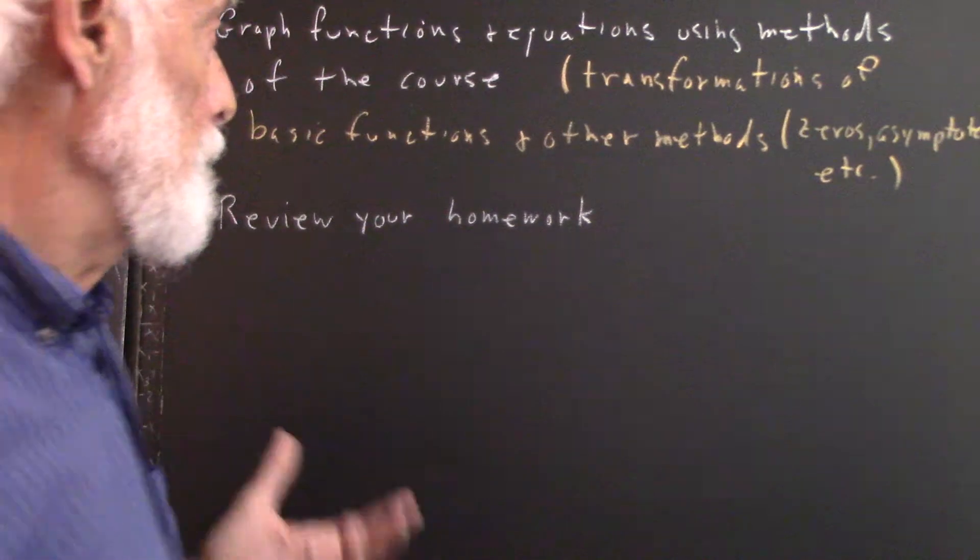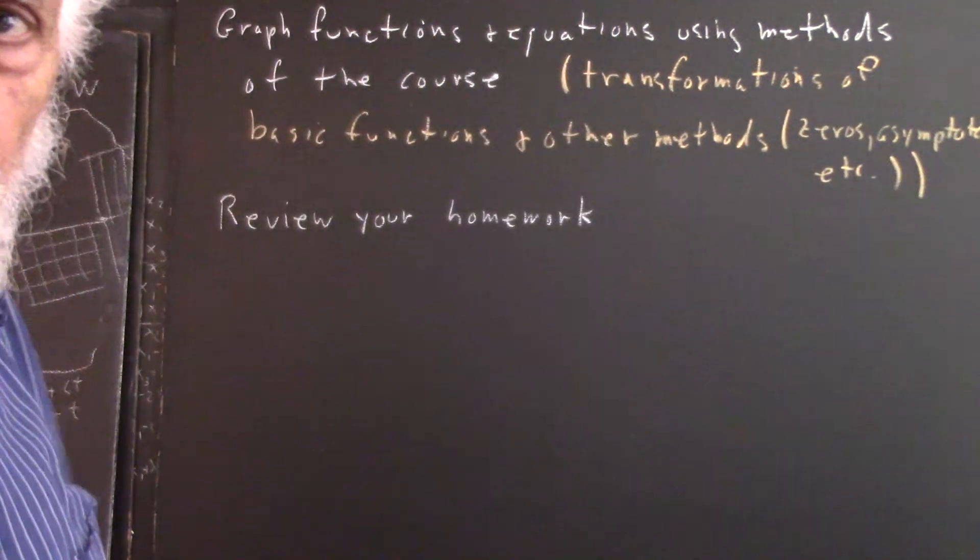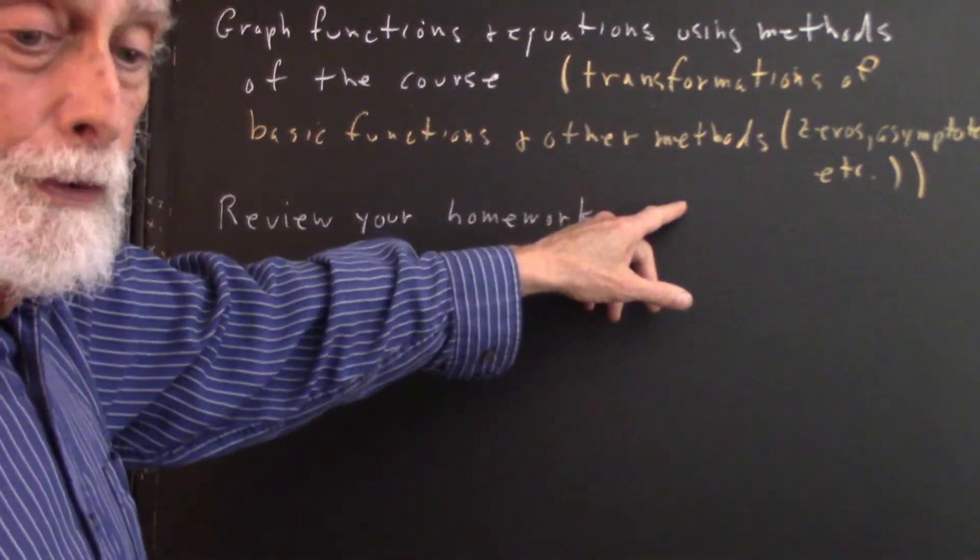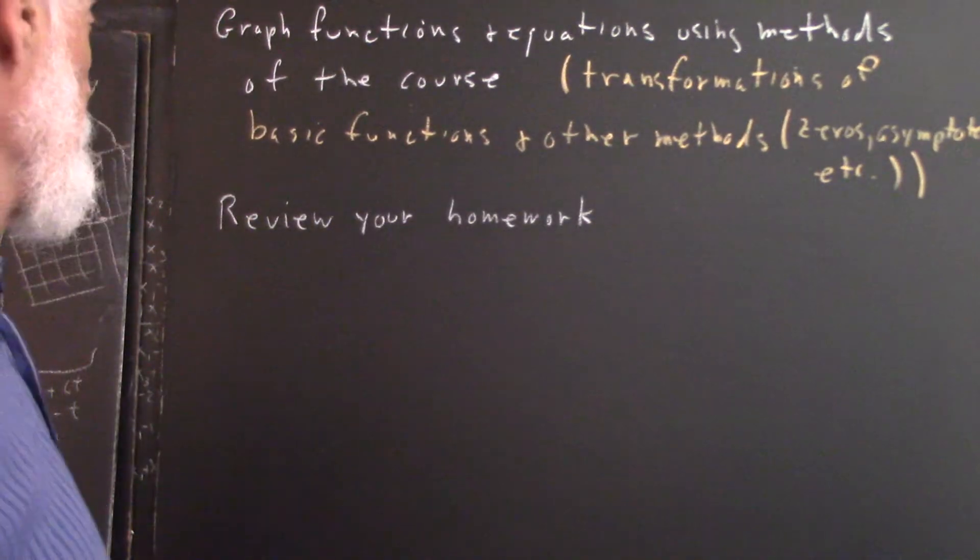Otherwise I assume that your graph was copied from a graphing calculator which gets no credit whatsoever. You need to show how you use the transformations. You need to show how you reason out the graph.